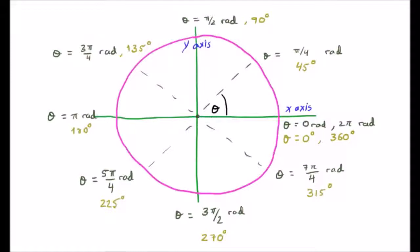We find that 180 degrees is pi radians. That 225 degrees is 5 pi over 4 radians. That 270 degrees is 3 pi over 2 radians. And finally that 7 pi over 4 radians is 315 degrees.